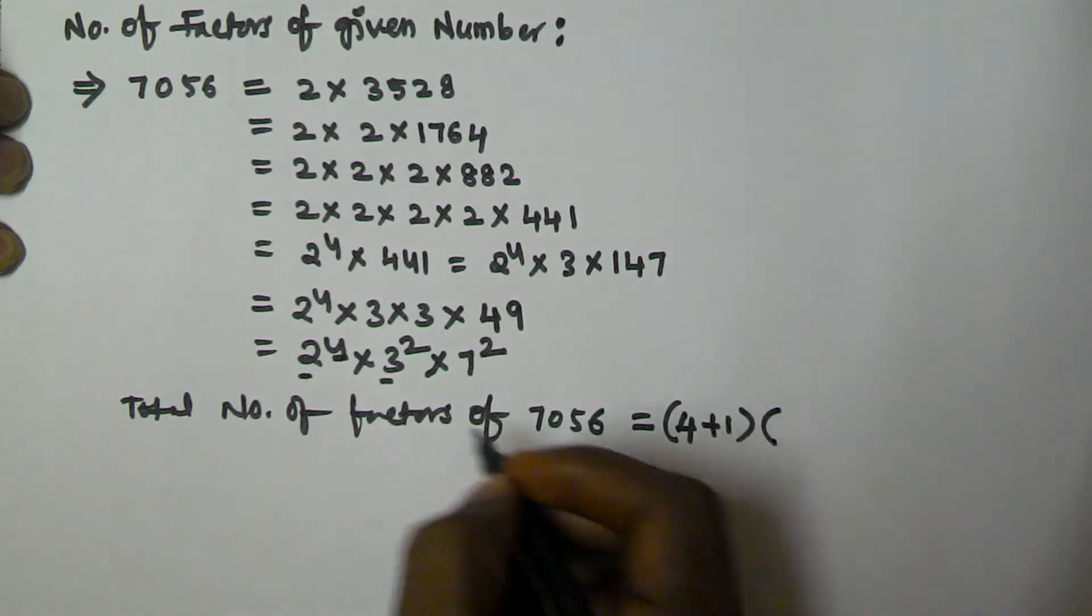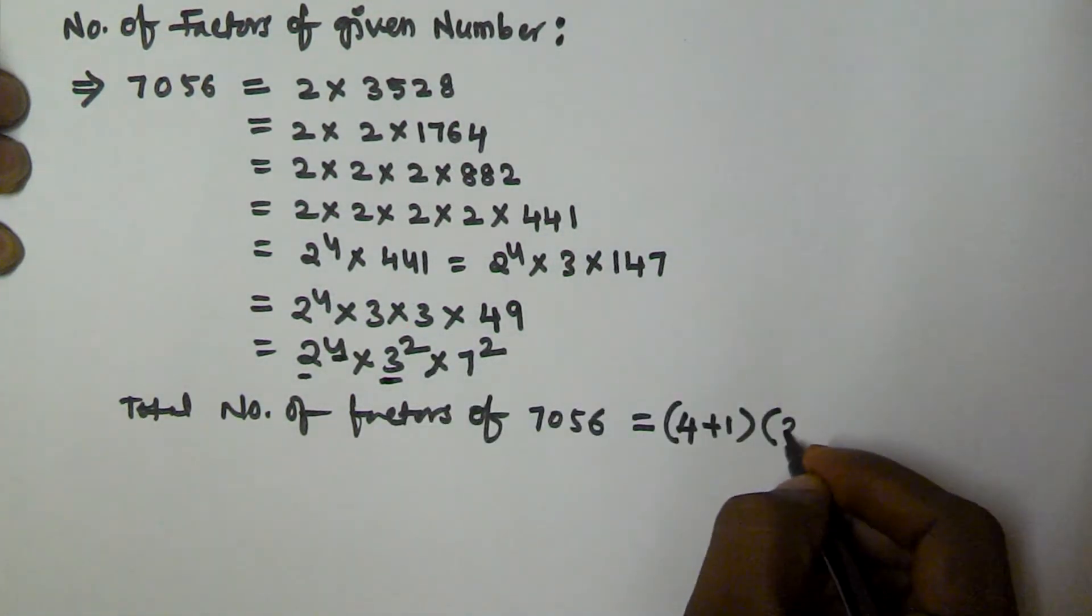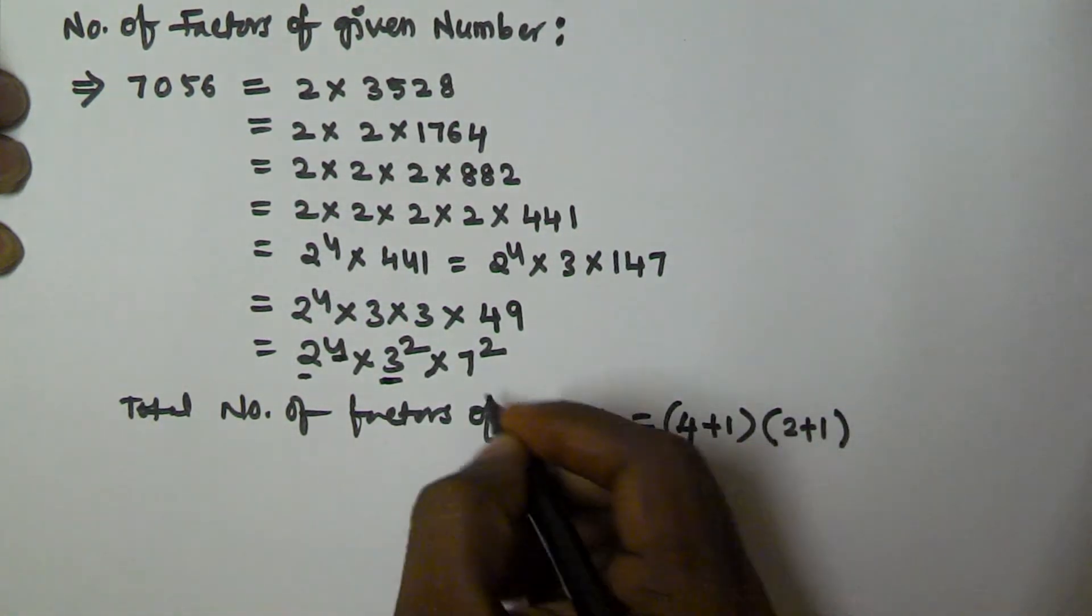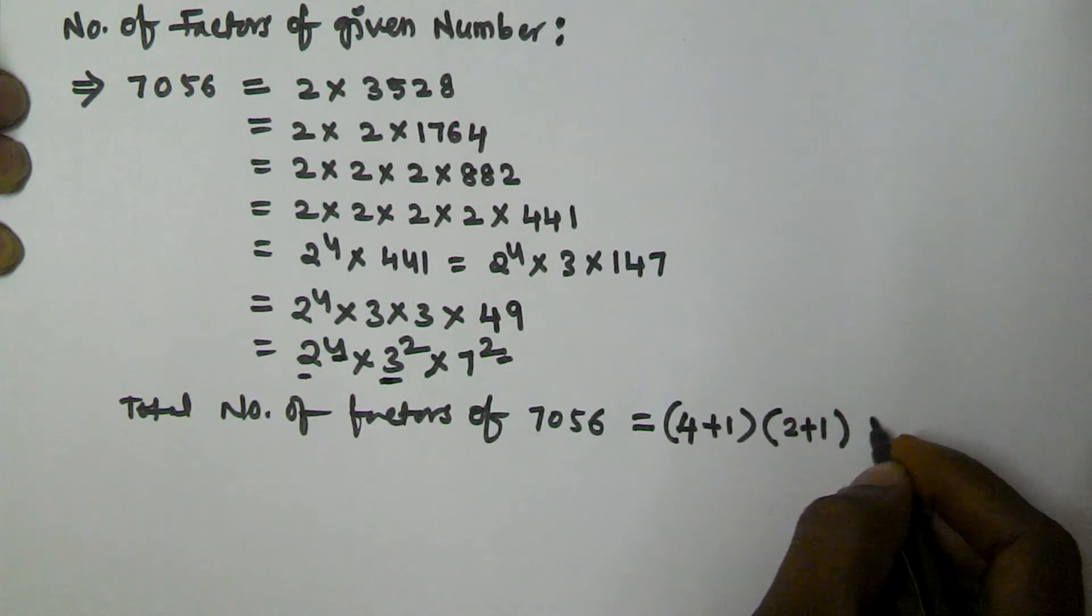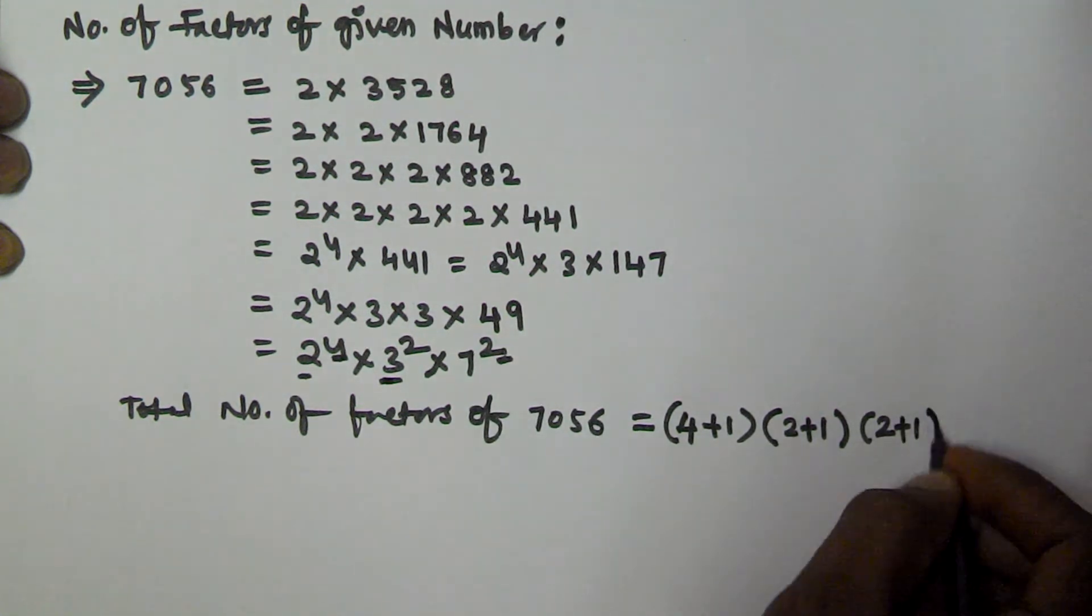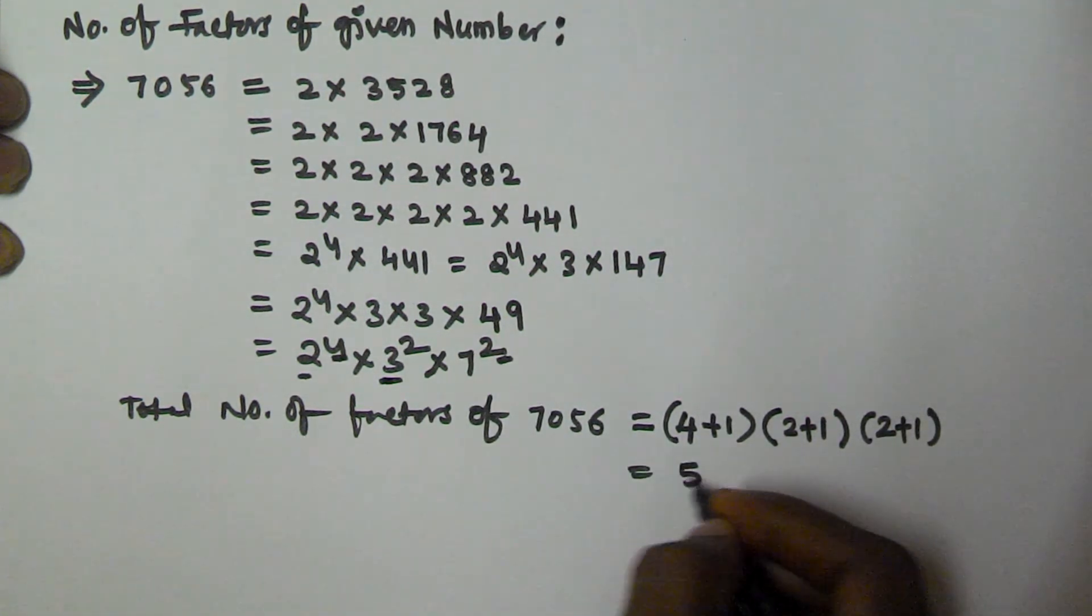So we have 3 to the power of 2, 2 plus 1, and we have 7 to the power of 2. Again we multiply, 2 plus 1, equal into 4 plus 1 is 5.